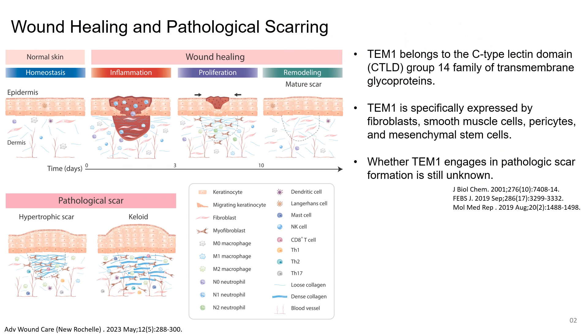So after skin injury, the wound healing process is started to repair skin structure. However, excessive fibroblast proliferation, activation, or collagen deposition can lead to hypertrophic scar or keloid.